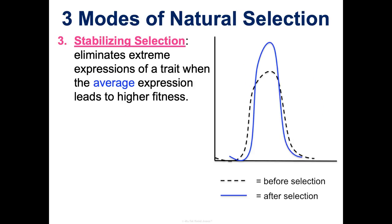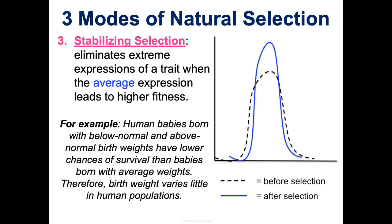The third mode of selection is stabilizing selection, where we just keep favoring the average, so the average gets even more favored. For example, human babies — there's a range in weight. Babies below a certain weight have a hard time surviving, and babies that are really large can't get out of the womb and may have health issues. So there's an average weight that's been favored over time, and babies born within that certain range have the best chance of survival.